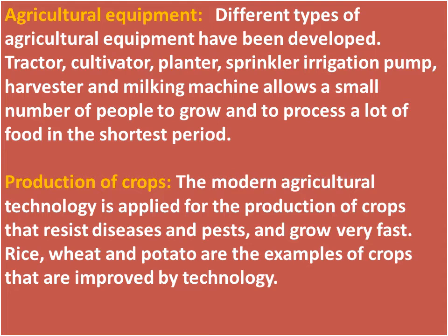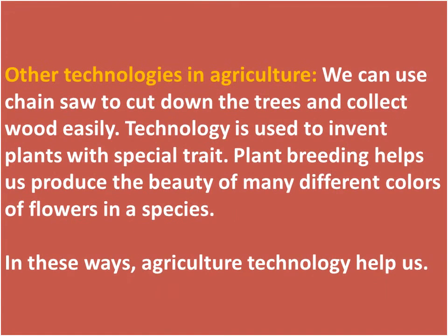Production of crops: Modern agricultural technology is applied for the production of crops that resist diseases and pests and grow very fast. Rice, wheat, and potato are examples of crops that are improved by technology.